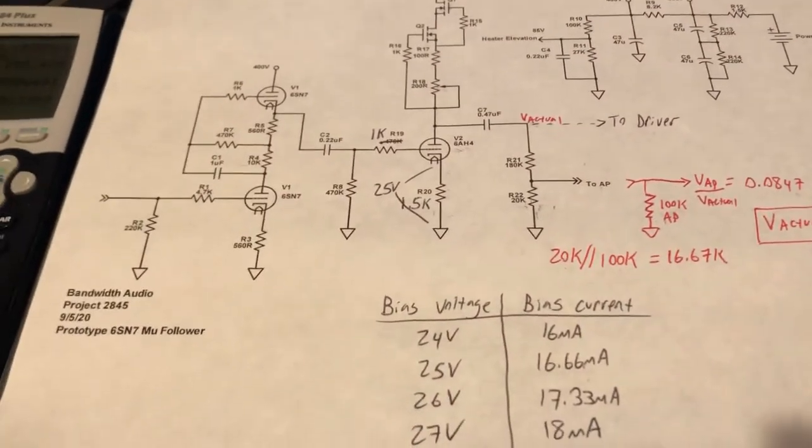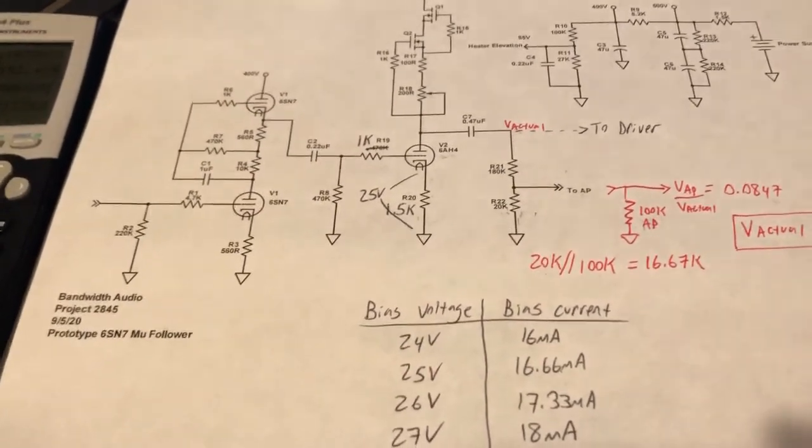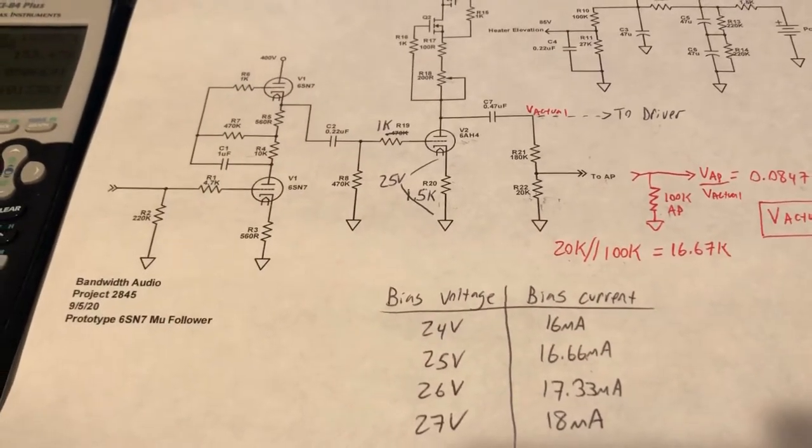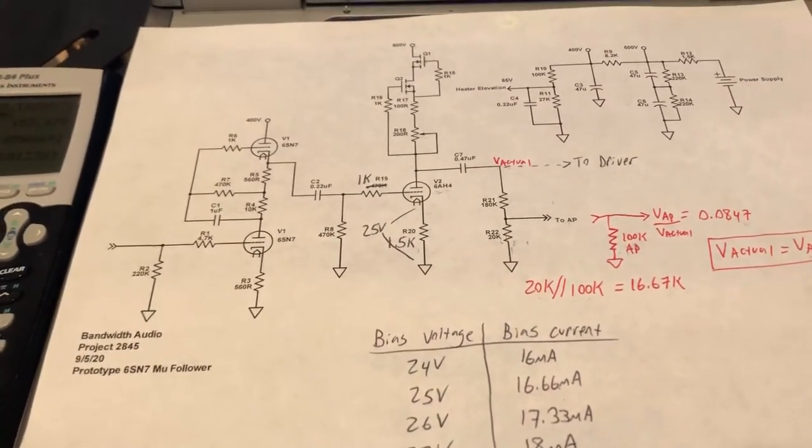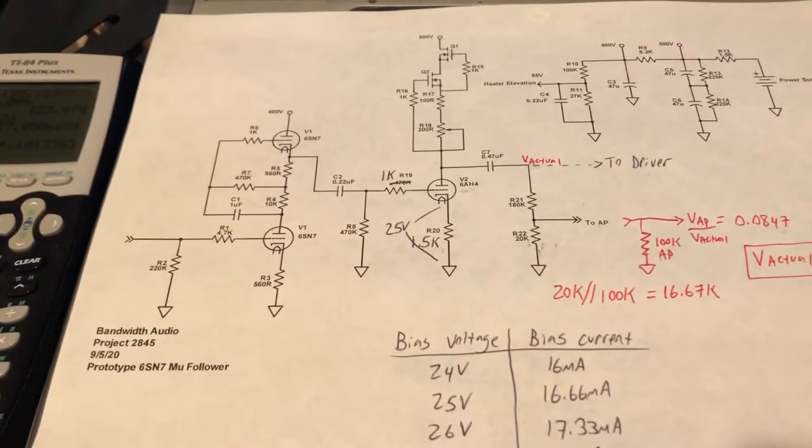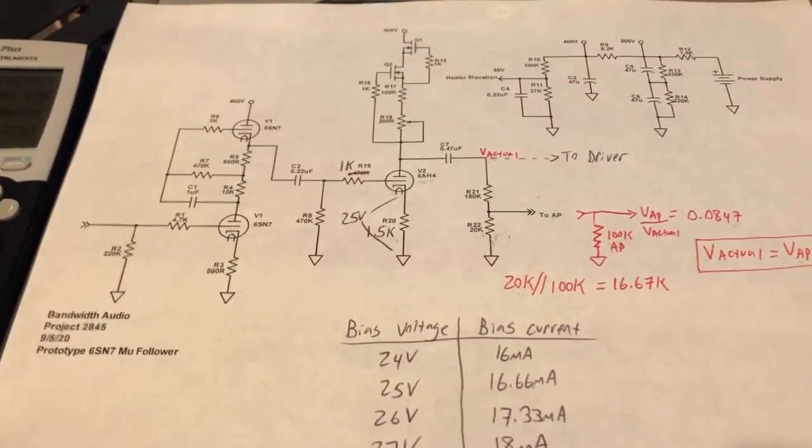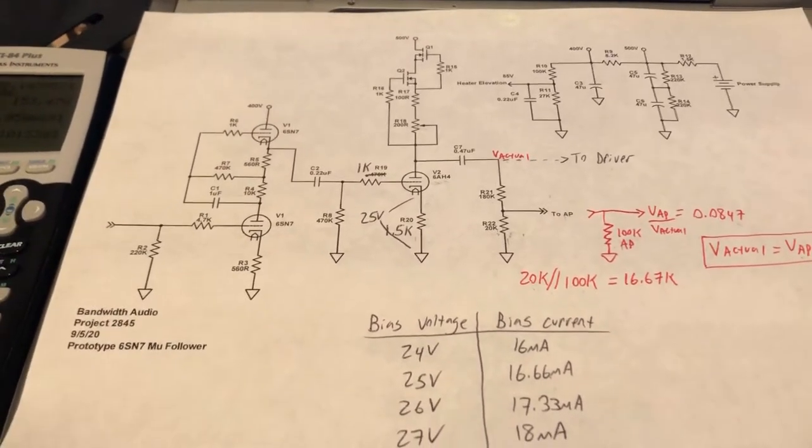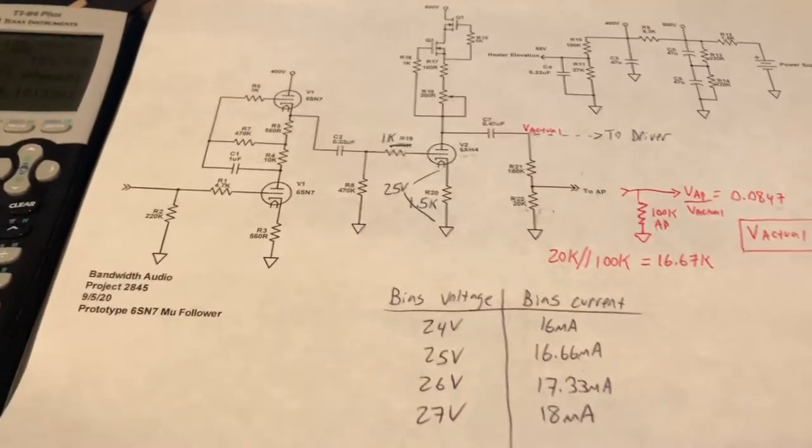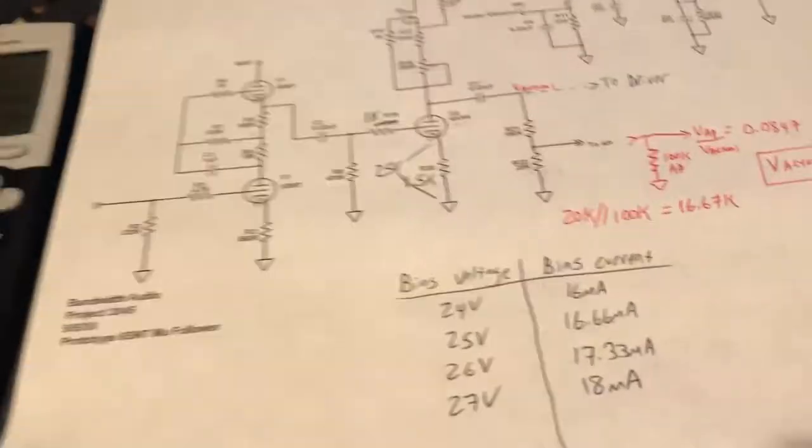That really seems to be, for this operating point, our maximum signal swing. And that held true across a few different 6AH4s. And actually, what I'll do in a minute is substitute in a weaker 6AH4, which has worse THD performance, mind you. But the maximum signal swing available is pretty much identical to this tube, which I'm running now, which is a particularly strong tube.